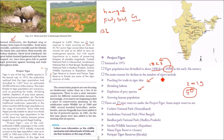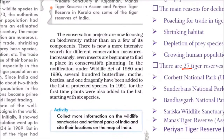Conservation projects are now focusing on biodiversity as a whole — everything from the smallest to the largest. Under notifications of the Wildlife Act in 1980 and 1986, several hundred butterflies, moths, beetles, and one dragonfly were added to the protected species list. In 1991, for the first time, plants were also included, starting with six species.